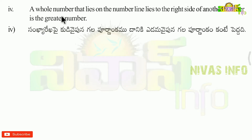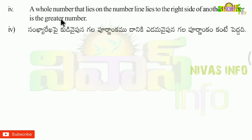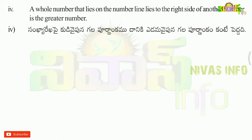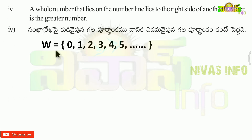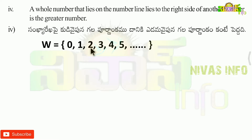Next problem: a whole number that lies to the right side of another number on the number line is the greater number. On the number line, if a number is to the right, it is big. For example, 2 is to the right of 1 and 2 is bigger than 1. So, the statement is true.